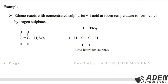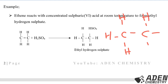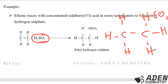The double bond breaks up. We show the single bonds. Ethene had four hydrogen atoms — one, two, three, four. From the sulfuric acid, we get two hydrogen atoms and the sulfate radical. The sulfate radical can be placed on either carbon. This gives us ethyl hydrogen sulfate.